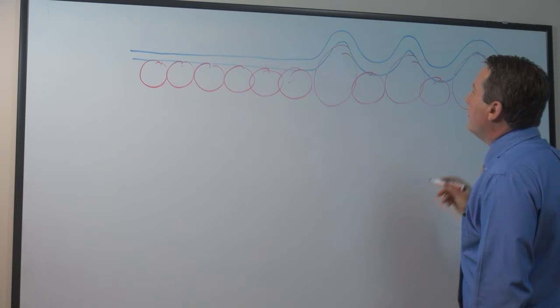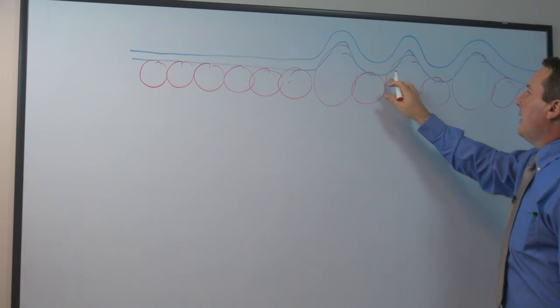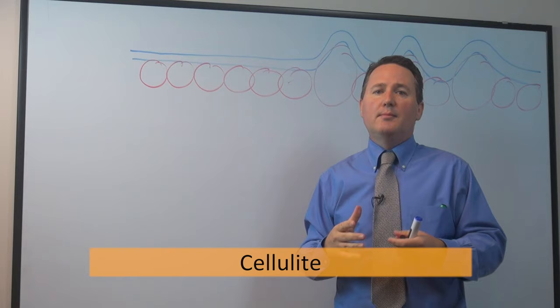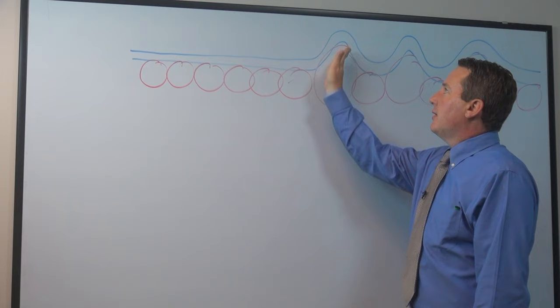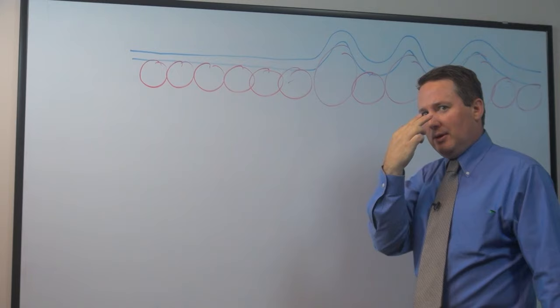And if you notice, sometimes fat cells are swollen up and larger, in this case here, and those larger fat cells are called cellulite. Cellulite is nothing more than extremely large fat cells. And sometimes they're so large that they push up against the dermis and the epidermis and create a wavy appearance that we can see with our eyes.